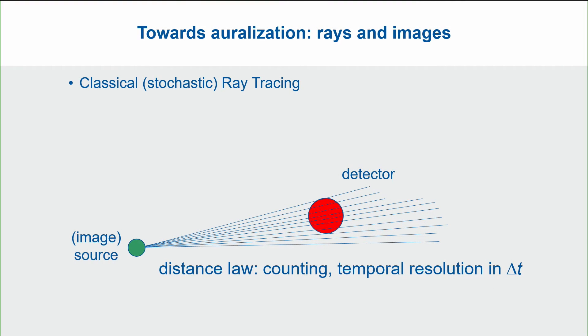Let's recall the method of ray tracing, which is basically a stochastic method, where we count ray events hitting a volume receiver in certain time intervals delta t.